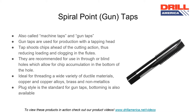Spiral point taps, also called gun taps or machine taps, are used for production with a tapping head. The tap shoots chips ahead of the cutting action, thus reducing loading and clogging in the flutes. These taps are recommended for use in through or blind holes which allow for chip accumulation in the bottom of the hole.